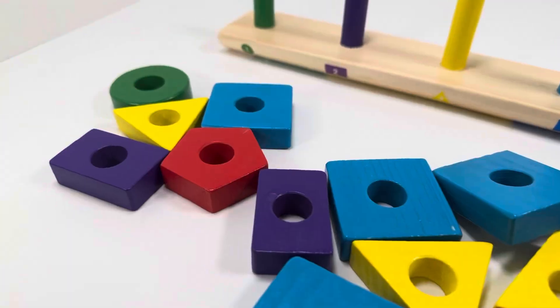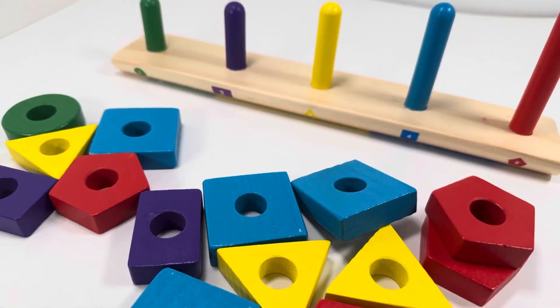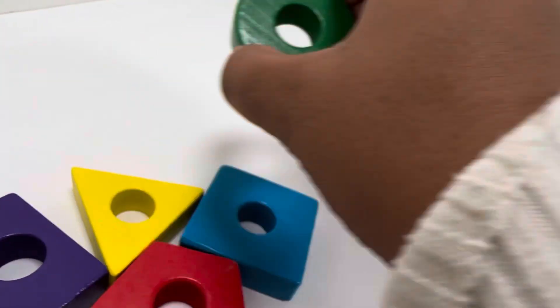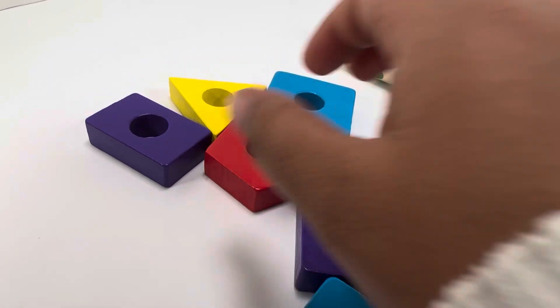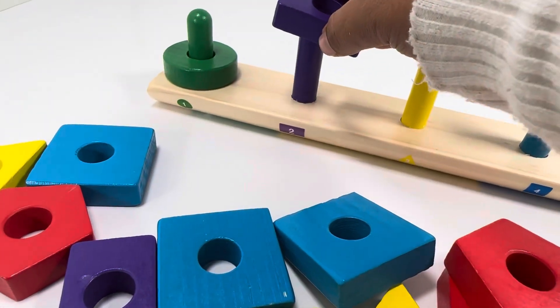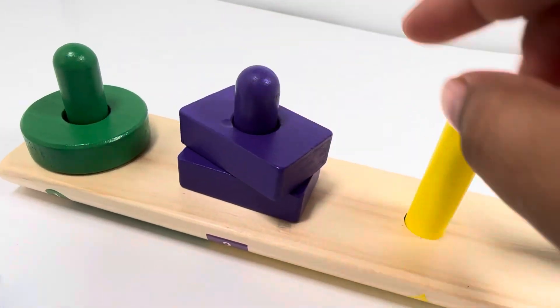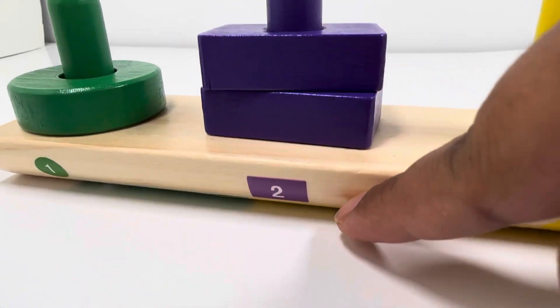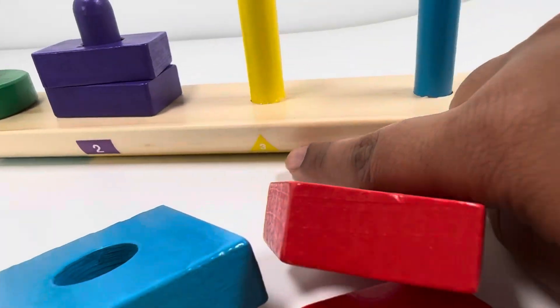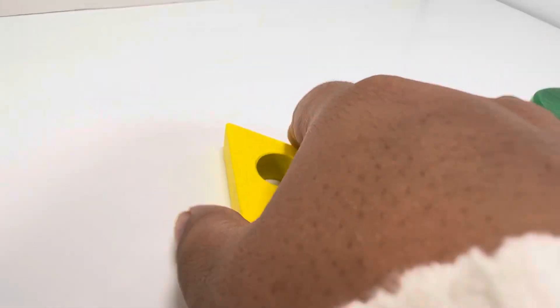Now stack them and count them together. One green circle, purple rectangle. One, two—two purple rectangles. Next is triangle, one.